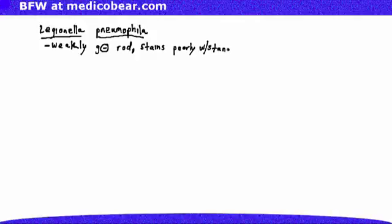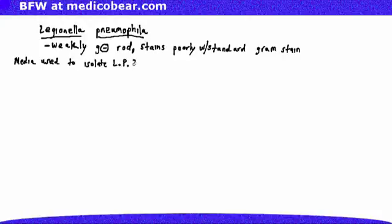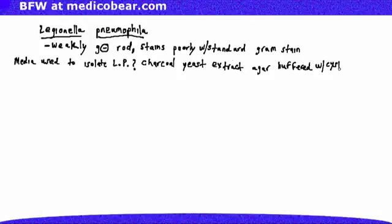Legionella pneumophila is a weakly gram-negative rod. It stains poorly with the standard gram stain. The media used to isolate Legionella pneumophila is the charcoal yeast extract agar buffered with cysteine and iron. This is very specific to Legionella pneumophila. That's how we isolate and get it to grow using this media.